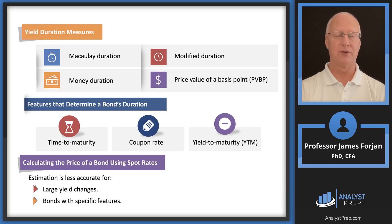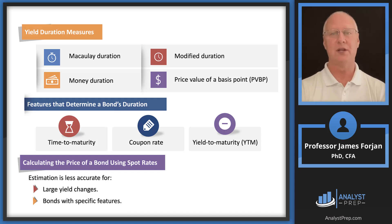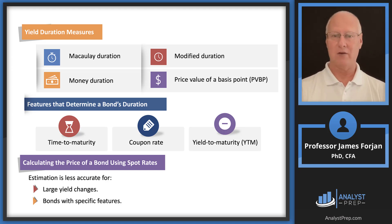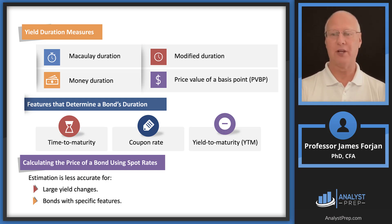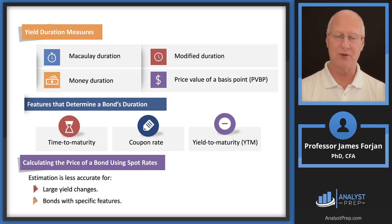We'll work through Macaulay duration, which we did before, then modified duration, money duration, and price duration. Please recall from the interest rate risk learning module that the formula had three variables: time to maturity, coupon rate, and yield to maturity — the exact same three input variables you need to determine the price. Those three inputs help you determine bond duration as well; they're the only three you need.